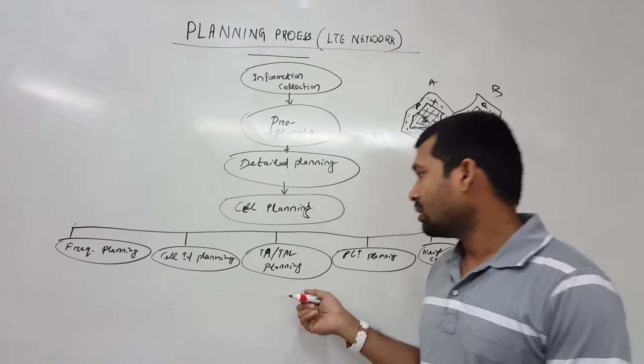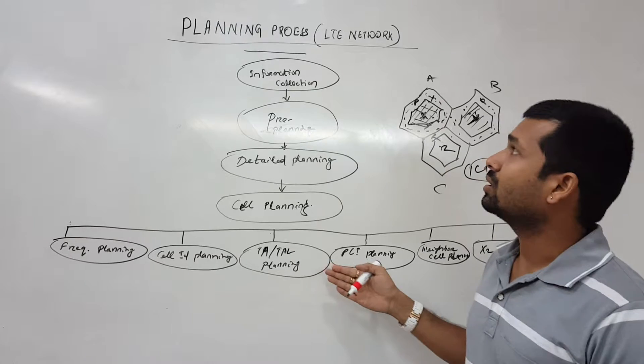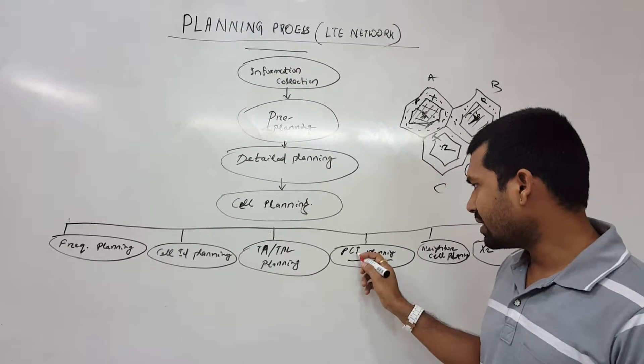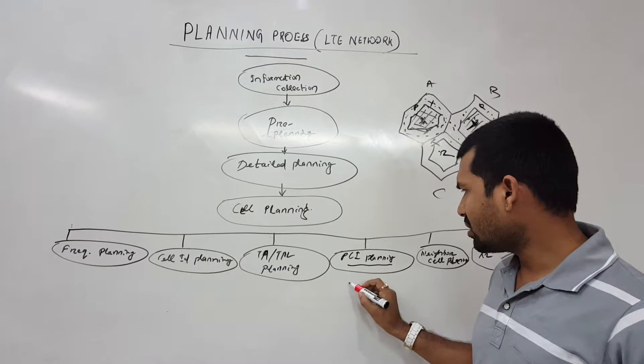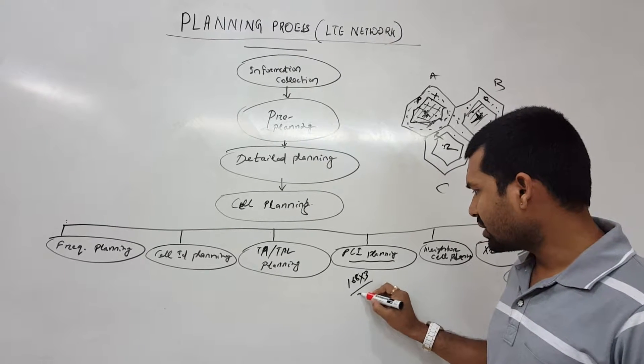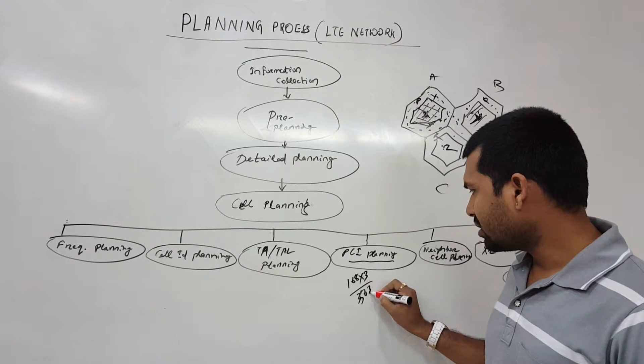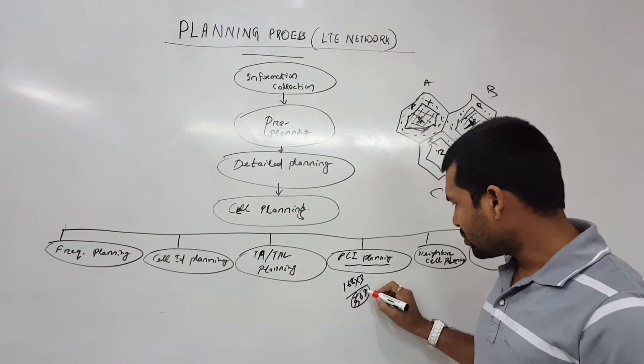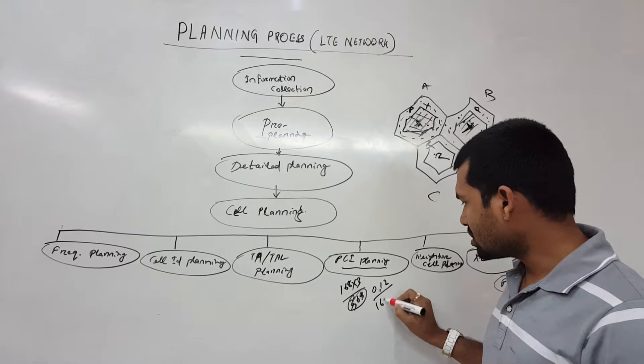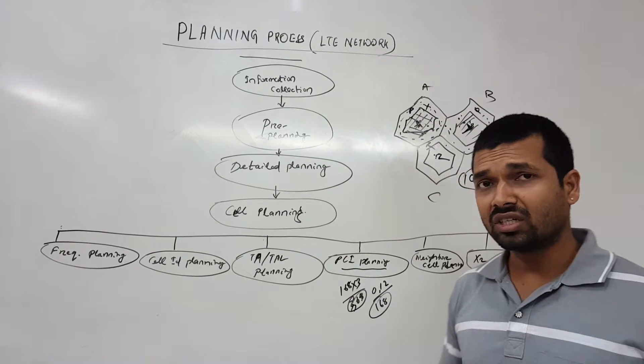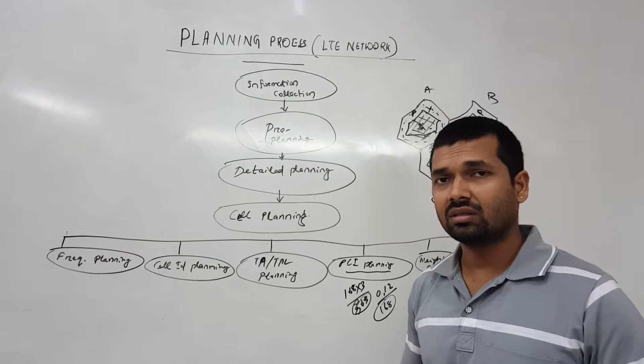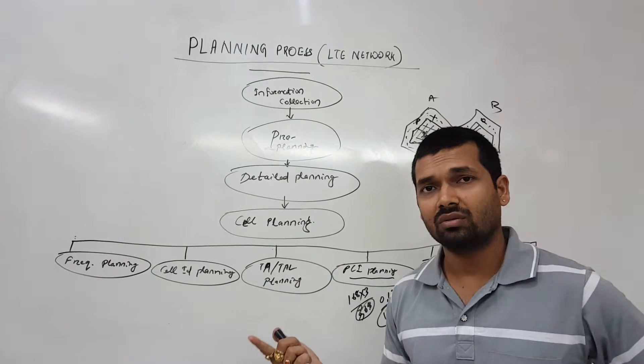We will go in detail how it is planned. This is just an overall planning process. Then PCI planning: physical cell identifier. So in PCI we are having 168 different groups. Total number is 503 or 504, so 0, 1, 2, and then 168 groups.